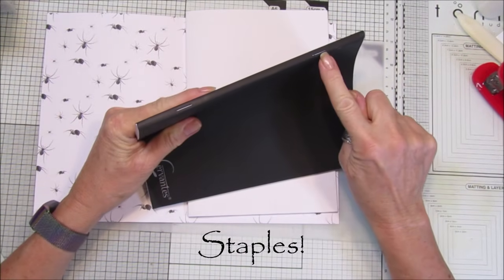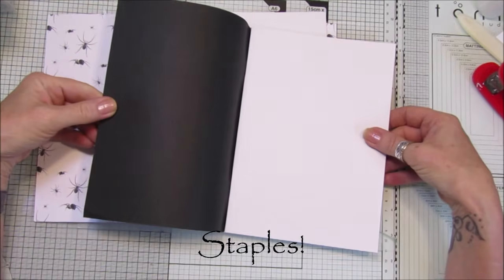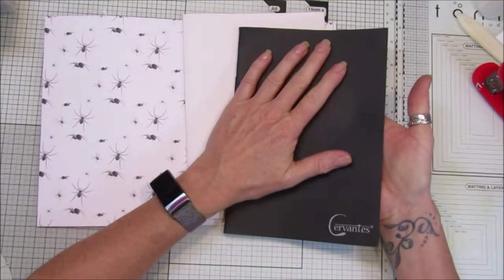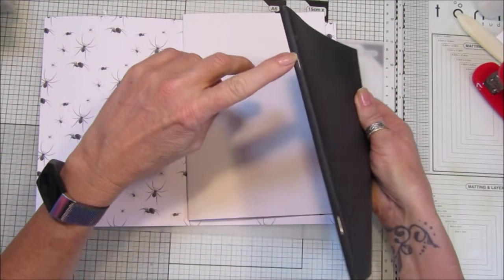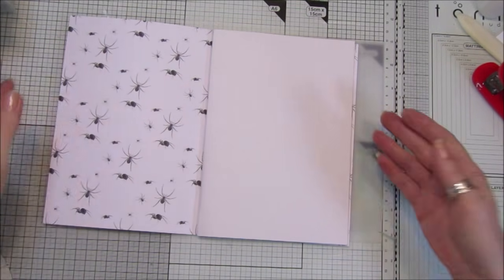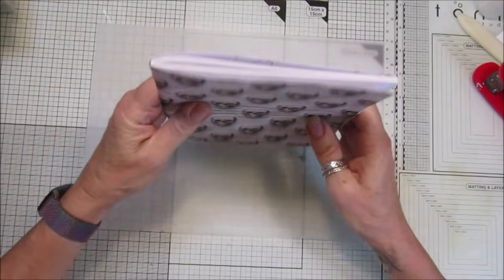I've just folded it in half. I took the paper clips out of here and taken the cover off. If you didn't want to do that, you could stick the paper onto the cover even easier, but I thought I would just take it off and do it that way.